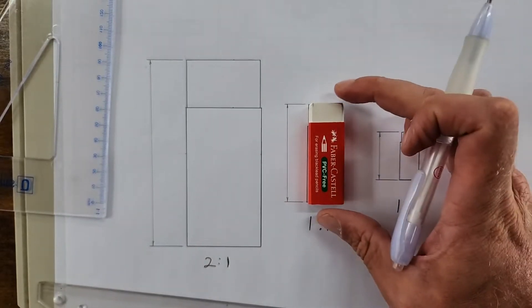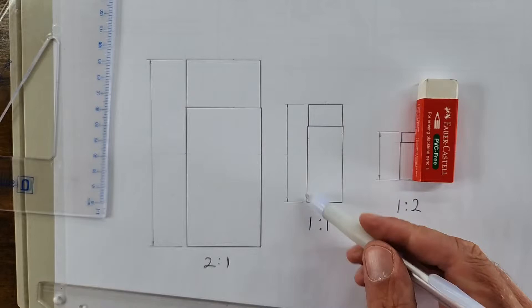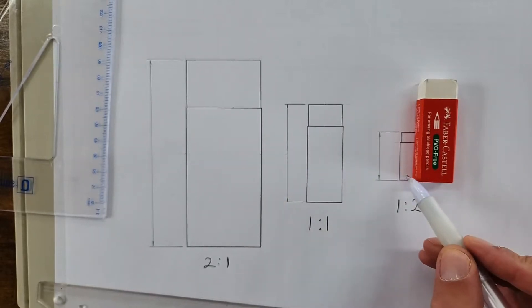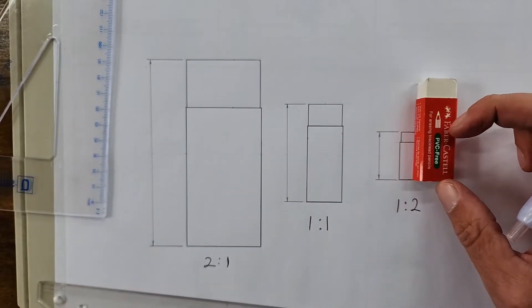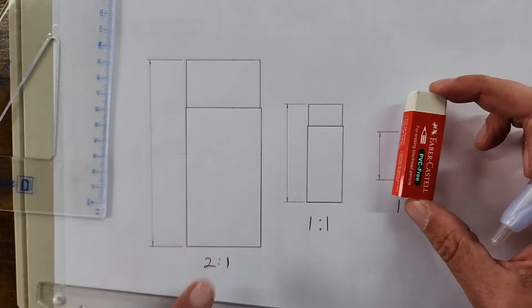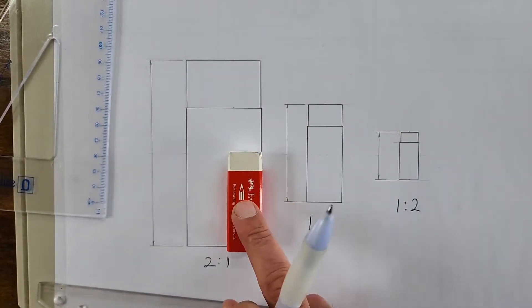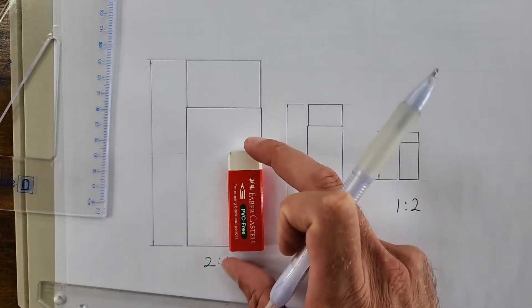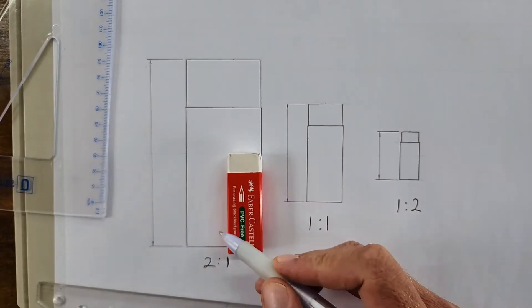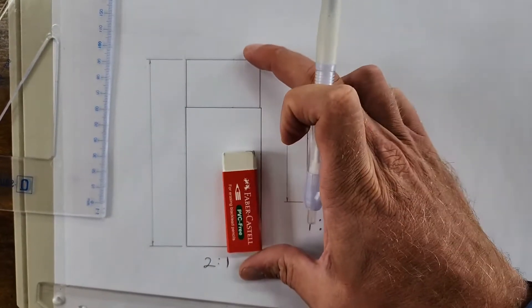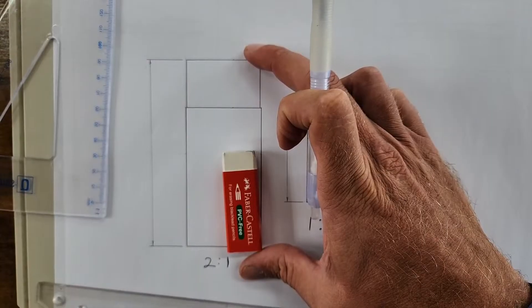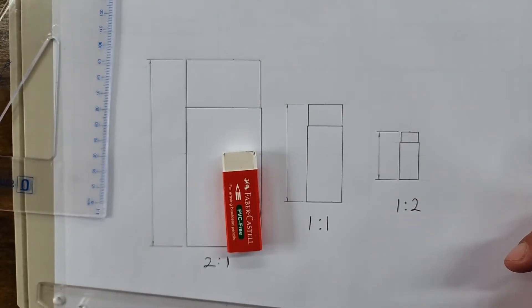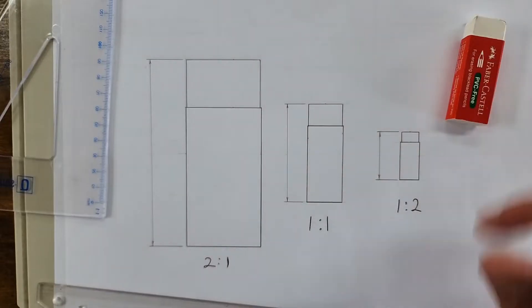So when I draw something scale 1 to 1, I'm using its actual measurements. When I'm doing it half scale, I have to divide the measurements by 2. So if it was 60, it's now going to be 30. If I draw scale 2 to 1, I have to multiply my measurement, the actual measurement, with 2. So if it was 60, now it's going to be 120. Are you with me? That's how scale drawings work. Now here's the catch.